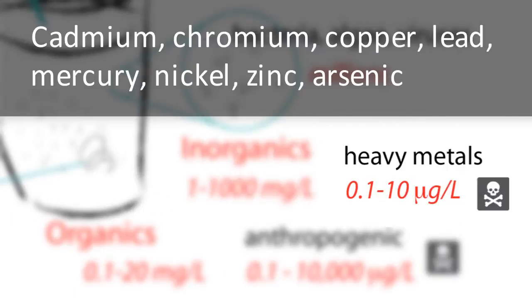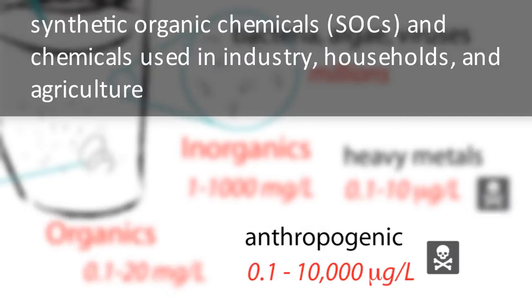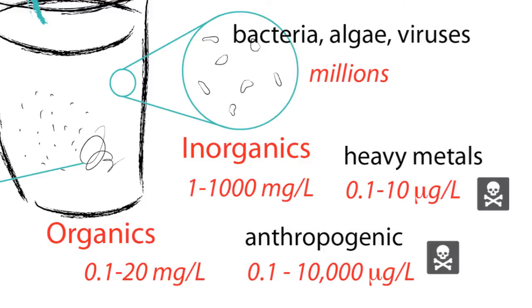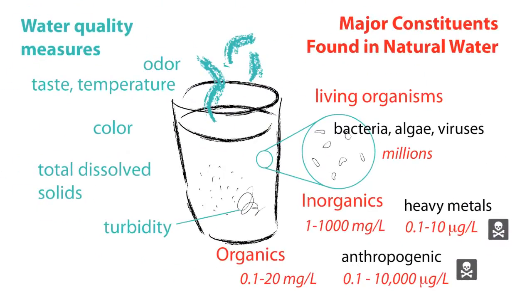For example, the typical contaminants found in natural water in a developed country include major inorganics, minor inorganics, naturally occurring organic compounds, and anthropogenic organics. Some of these constituents are toxic; others simply affect the odor, taste, and color of the water. Quality measures of water include odor, taste, temperature, color, and total dissolved solids.